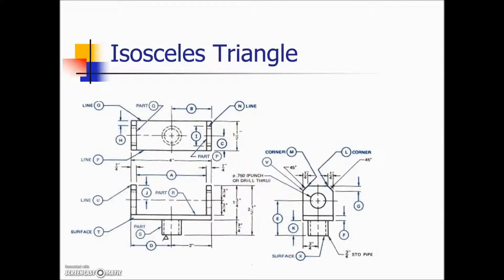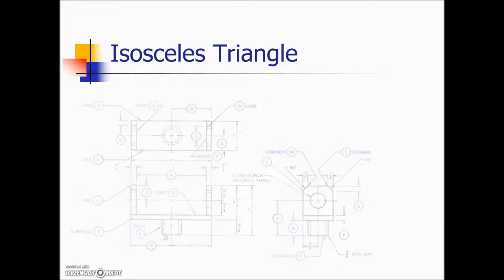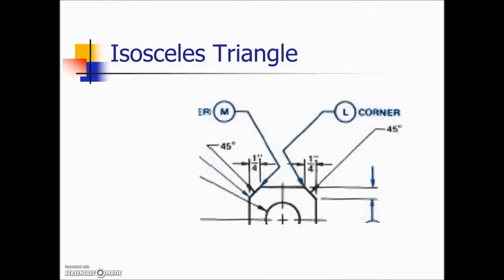Here we have a blueprint and if we blow this up, we can see here on this upper left-hand corner an isosceles triangle. They're giving us that this side is a quarter of an inch. If we blow that up to look at it further, we have an angle of 45 degrees.